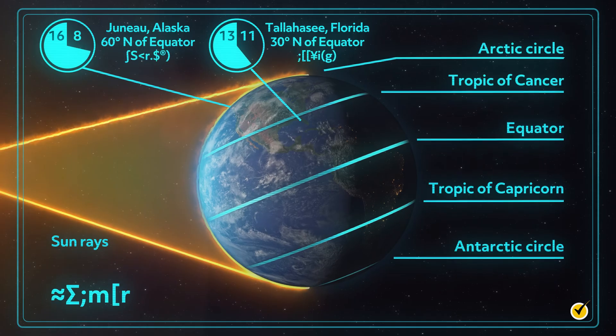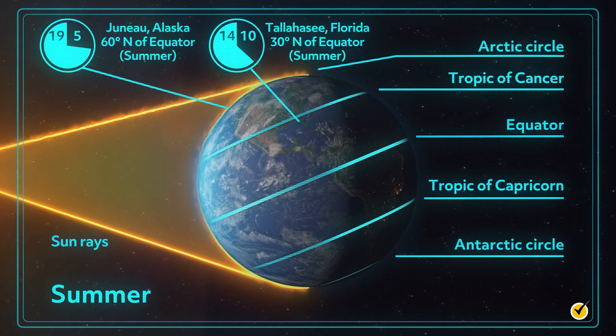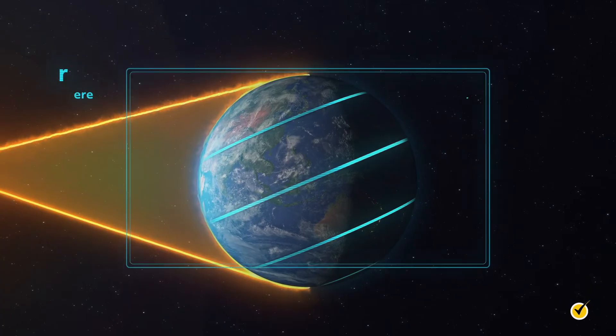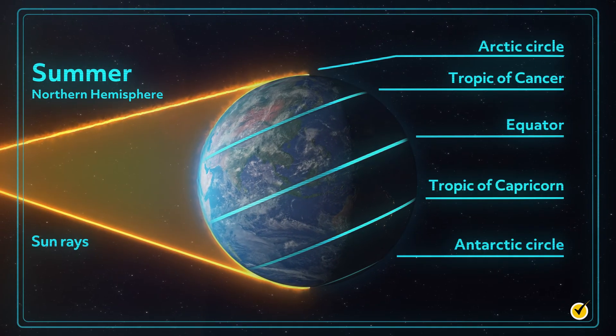As spring turns into summer, the days grow longer and the nights become shorter. When we talk about summer, we're going to refer to this as the Northern Hemisphere summer, since that is what the United States experiences. This is showing the first day of summer, which is called the summer solstice.